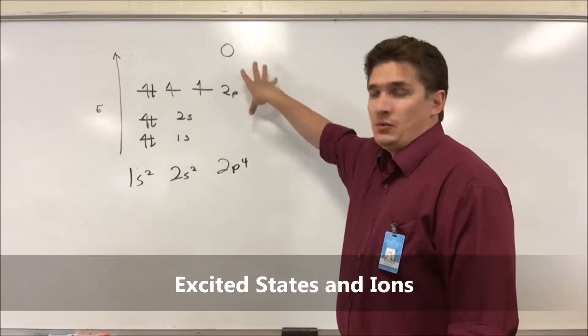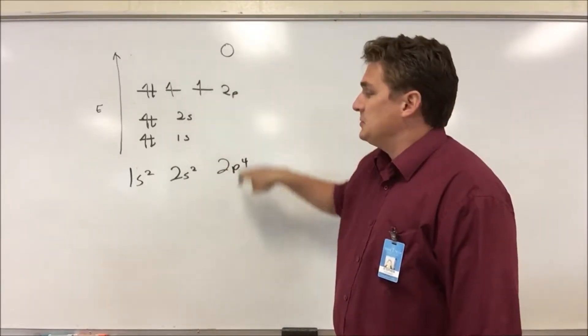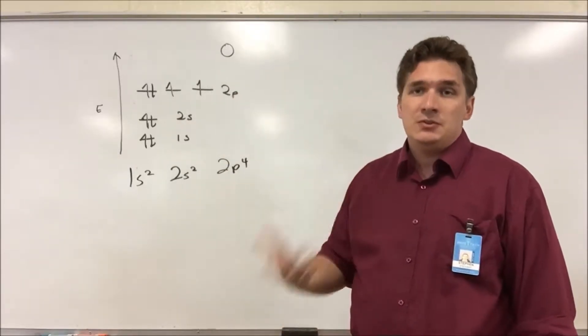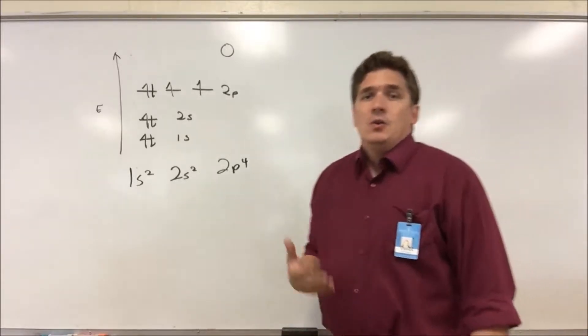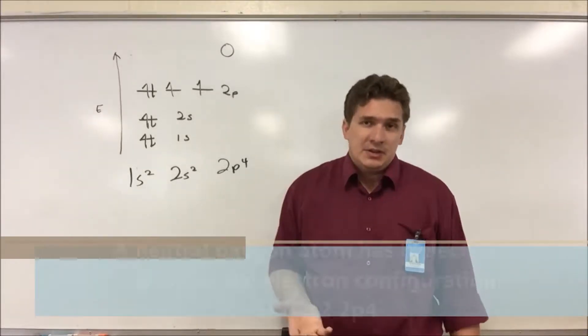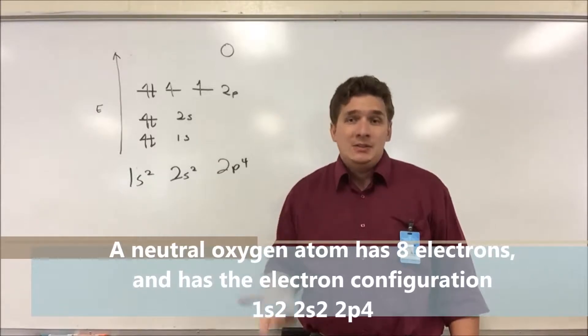So what I've got up here on the board is the electron energy filling diagram for oxygen as well as electron notation. This is just for a neutral oxygen atom. Oxygen can gain or lose electrons like any atom. So let's say we gain two electrons.